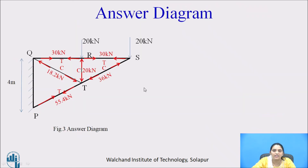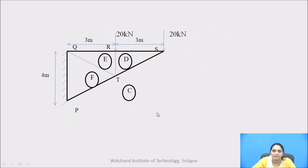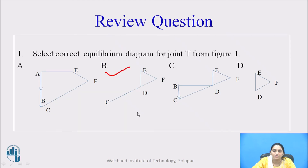This is the answer diagram. Now answer the question: select the correct equilibrium diagram for joint T from the figure. Joint T has surrounding spaces C, D, E, and F. These four spaces are shown in option B, so option B is the correct answer.